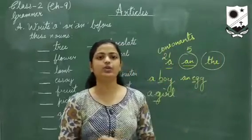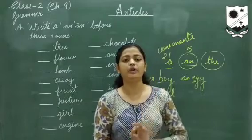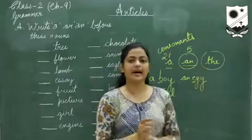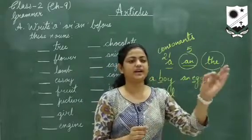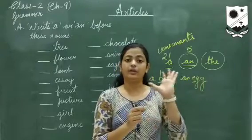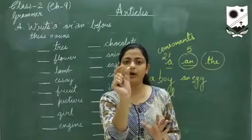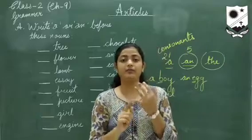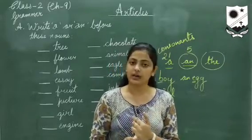'The' is used when we are talking about a particular person, place, or thing. For example: 'The boy who is standing there is my friend.' I am talking about a specific, particular boy standing there, so I use 'the'. For any particular person, place, or thing, we use 'the'.